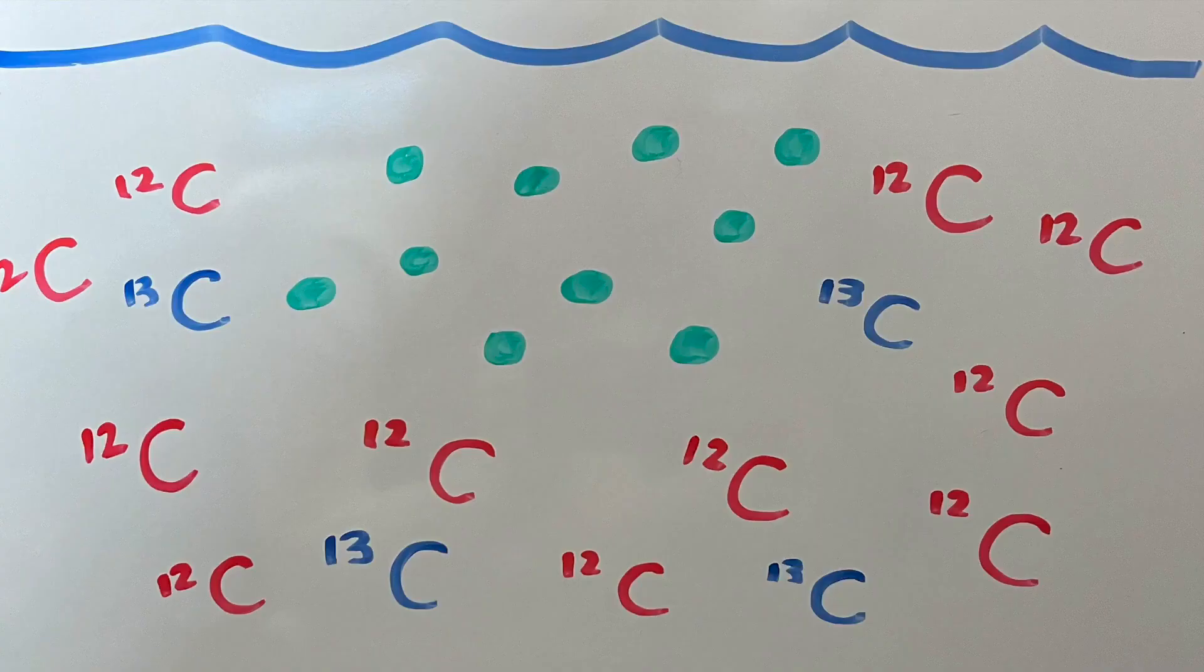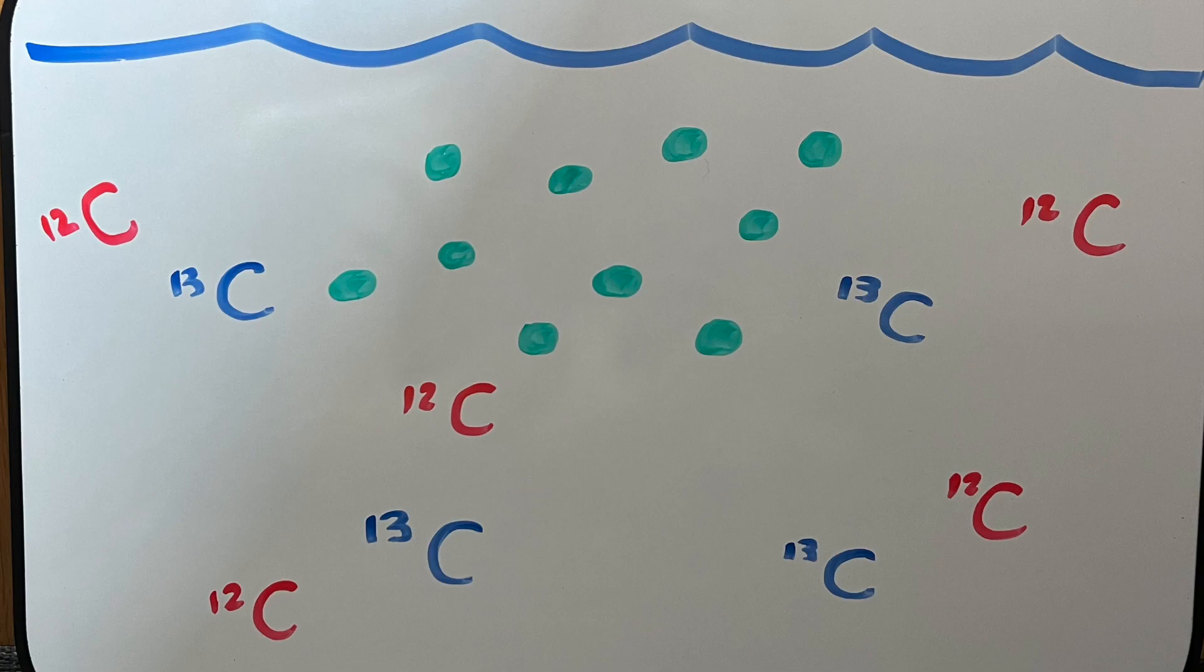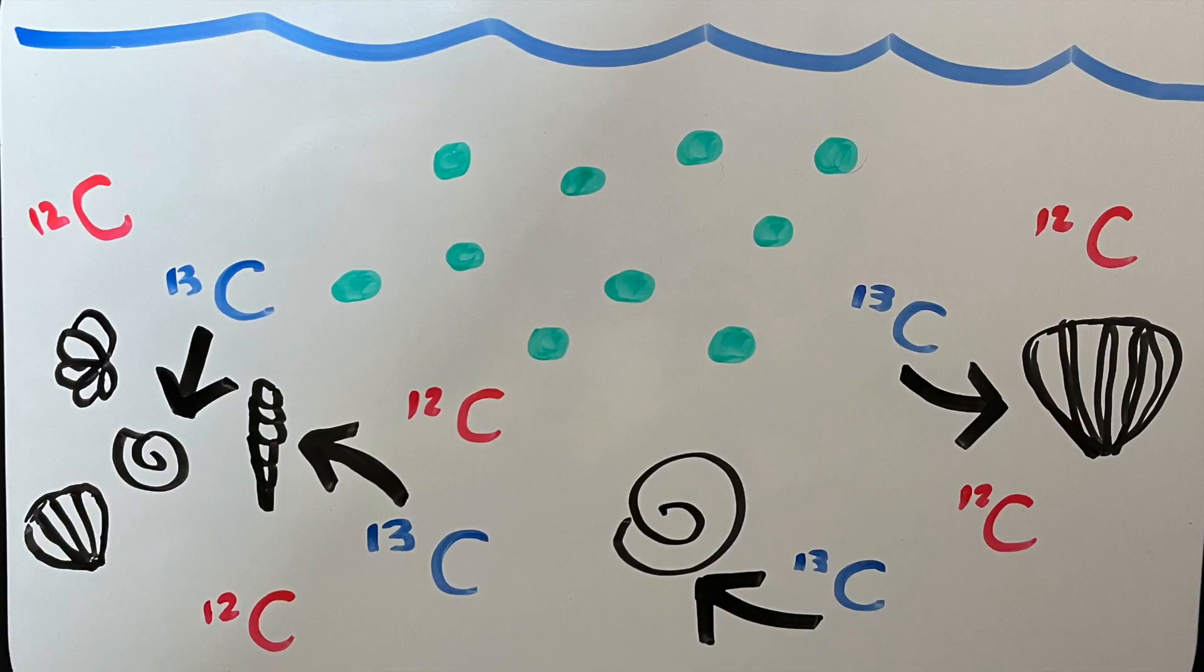Similarly, in the ocean, photosynthesizing organisms draw carbon from the carbon dioxide dissolved in the water column and leave behind a higher relative abundance of carbon-13, which other marine organisms then use to build their shells.